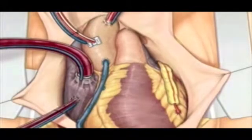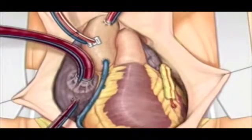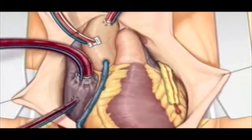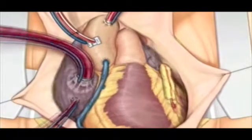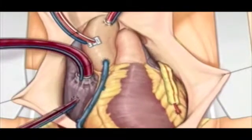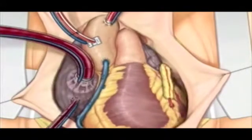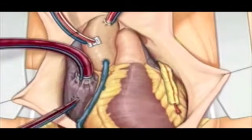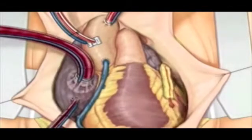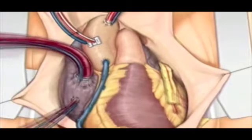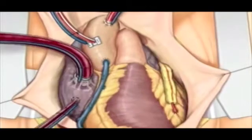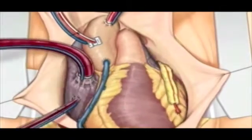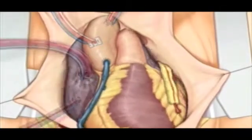We are now ready to come off bypass. As the flows are decreased and the heart is allowed to fill, following the Frank-Starling mechanism and allowing the cross-linking of actin and myosin to occur allows the contractile mechanism of the heart to be regained. Protamine is given to reverse the effects of heparin.